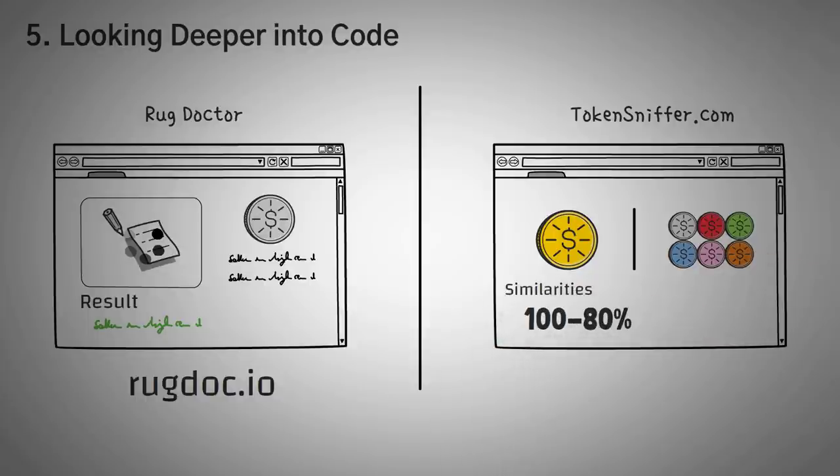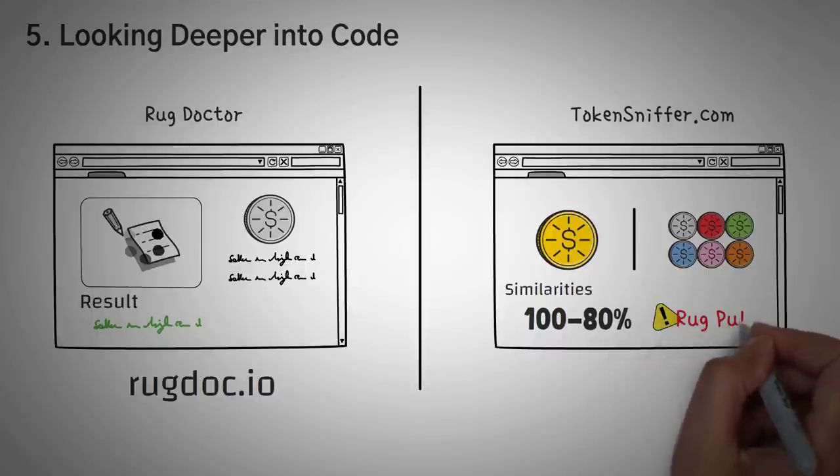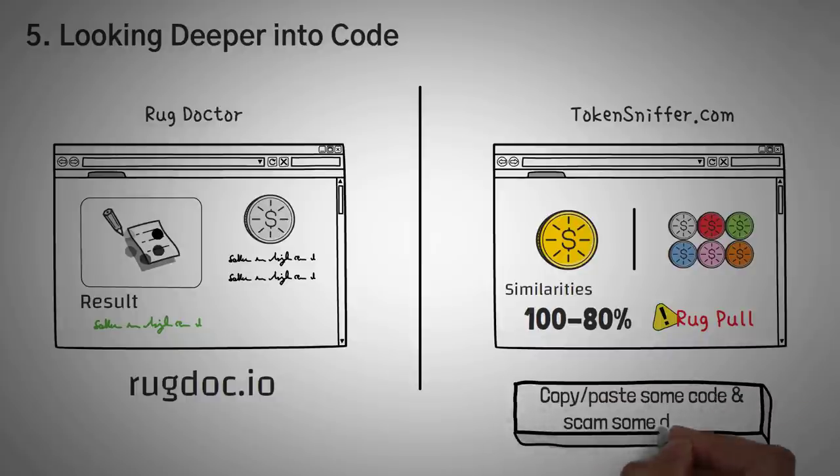Secondly, you want to bookmark TokenSniffer.com. TokenSniffer is an amazing website that basically compares a ton of tokens and how similar they are. If the token is 100% or even 80% similar to another token, well, it's not unique. And that's a huge red flag for rug pulls. Why create a unique token when you can just copy and paste some code and scam some degens?